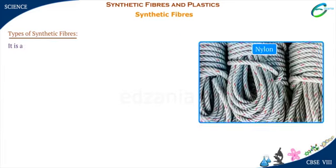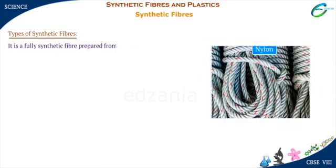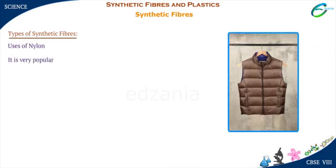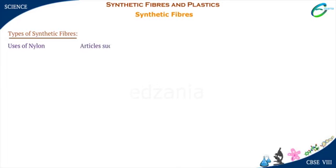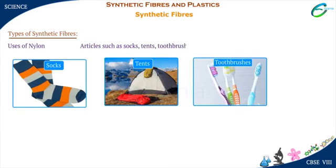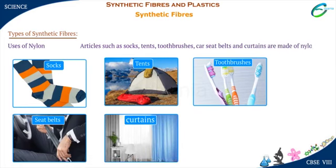Nylon is a fully synthetic fiber prepared from coal, water and air. Nylon fiber is strong, elastic and light. It is very popular in manufacturing clothes because it is lustrous and easy to wash. Articles such as socks, tents, toothbrushes, car seat belts and curtains are made of nylon.